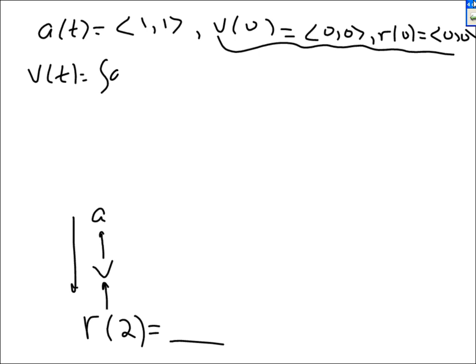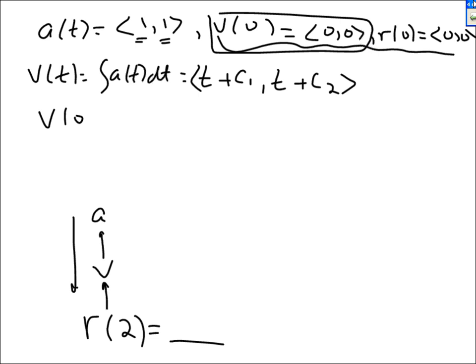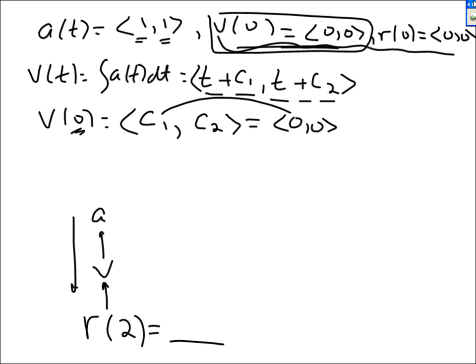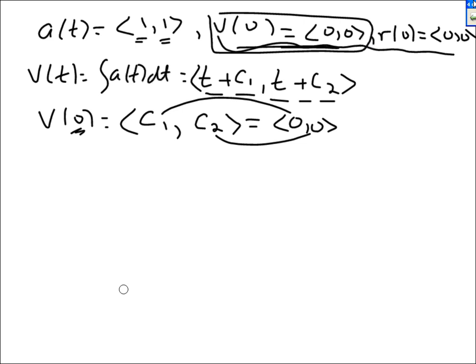V of t is the integral of a of t dt. The integral of 1 is t plus a constant c1, and the integral of the other 1 is t plus a different constant c2. Using the initial condition v of 0 is (0, 0): v of 0 gives (0 + c1, 0 + c2) = (c1, c2), which must equal (0, 0). So c1 is 0 and c2 is 0. Therefore v of t is exactly (t, t).